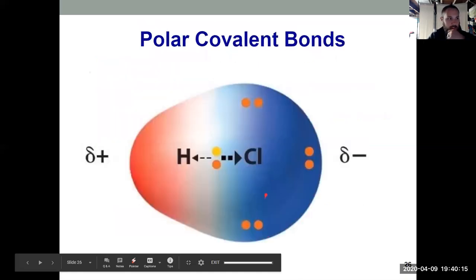That's what's shown on this slide right here. HCl, chlorine is more electronegative, it gets the delta negative. Hydrogen is less electronegative, it gets the delta positive.